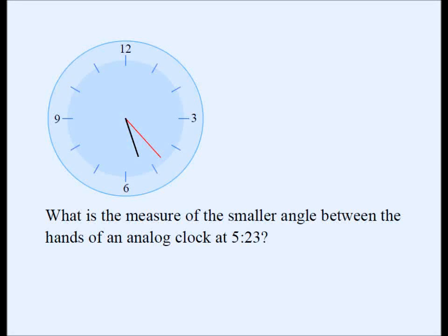This is a classic clock problem and we are going to find out the measure of the smaller angle between the hands of an analog clock at 5:23 — that's 23 minutes past 5. In other words, we are trying to find out the measure of this angle.